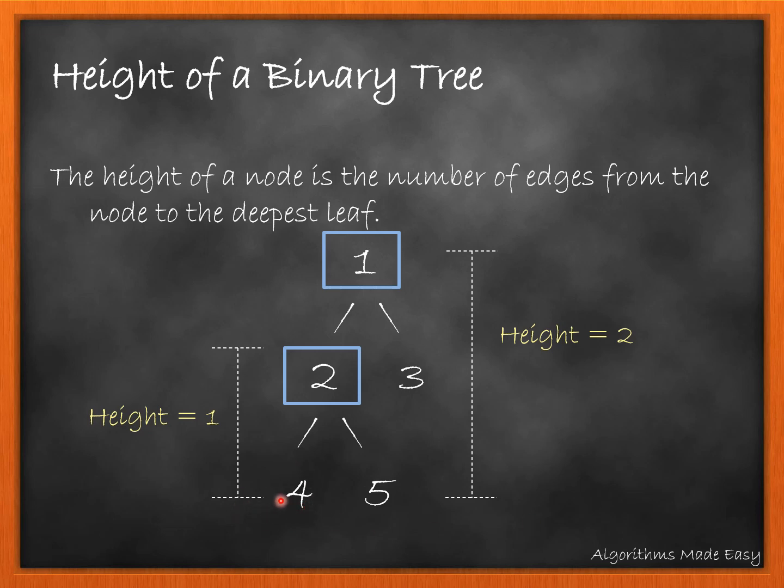In this example, node 4, 5 and 3 are the leaf nodes. So, their height would be 0. Height of node 2 is 1 and that of node 1 is 2.